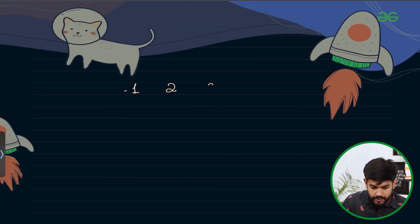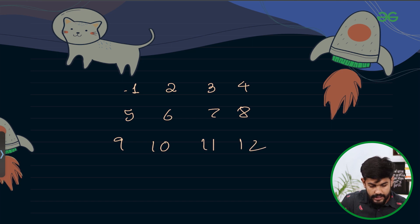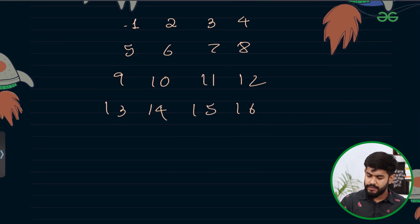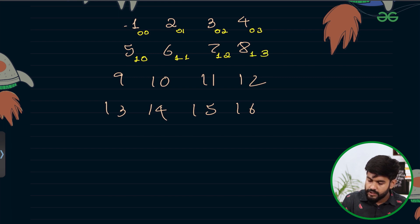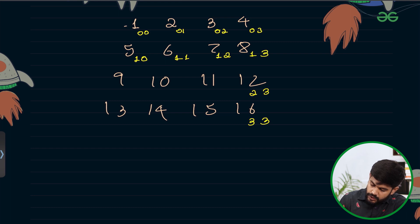Let us see the very first test case. The numbers are 1, 2, 3, 4, 5, 6, 7, 8, 9, 10, 11, 12, 13, 14, 15, and 16. The address of element at the top-left is 0,0; then 0,1; 0,2; 0,3. Similarly 1,0; 1,1; 1,2; 1,3. This continues — 2,3; 3,3; 1,0; 2,0; 3,0; 3,1; and 3,2.